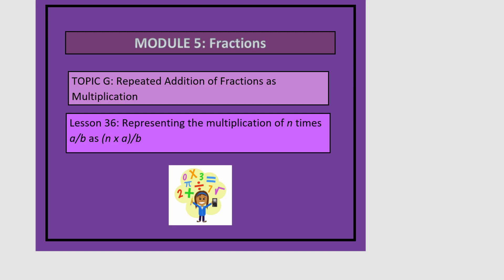This is Module 5, Lesson 36, and this one will be representing the multiplication of n times a over b as n times a over b.